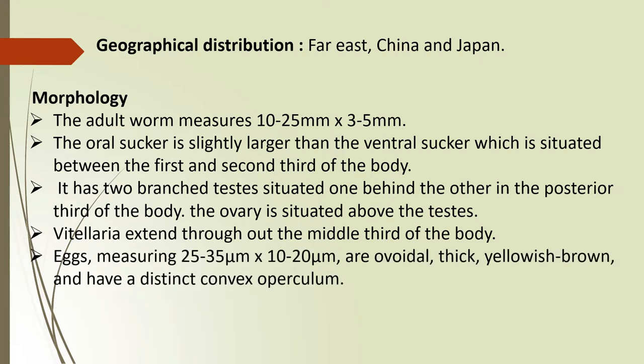The eggs measure 25 to 35 micrometers by 10 to 20 micrometers. They are ovoidal, thick, yellowish-brown and have a distinct convex operculum. These are unique features because trematodes have flat bodies, and these features make Clonorchis sinensis special among other trematodes.